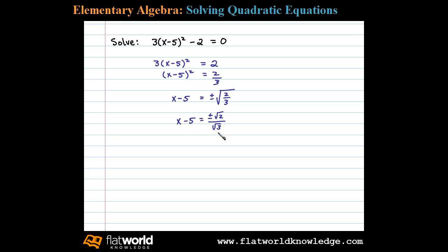Let's go ahead and rationalize the denominator at this point by multiplying numerator and denominator by √3. We're left with x - 5 = ±√6/√9, which is just ±√6/3.